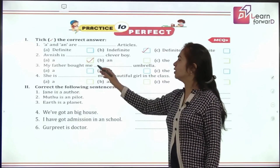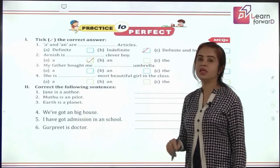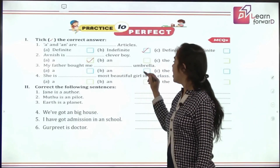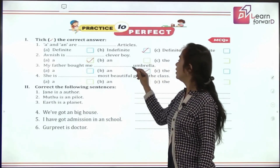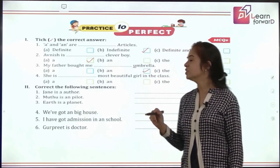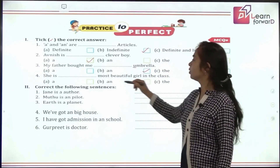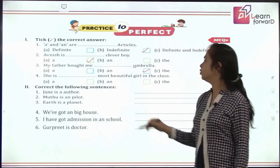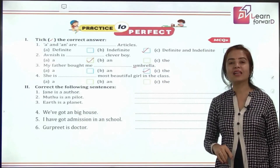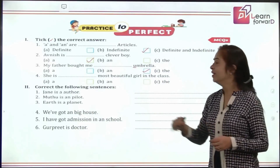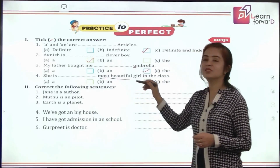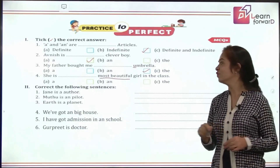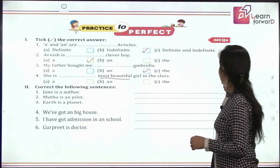'My father bought me ___ umbrella.' — It is an umbrella because this is a vowel sound and we are talking about singular. 'She is ___ most beautiful girl in the class.' — We are using the superlative degree of adjective, so we will use the: the most beautiful girl.